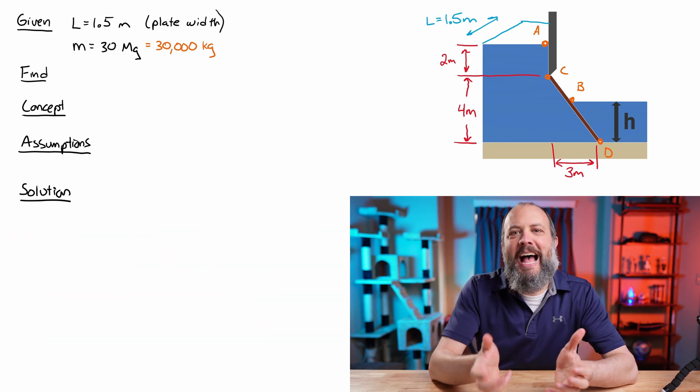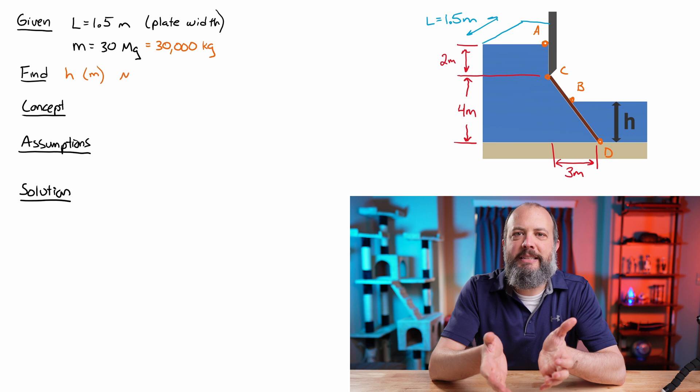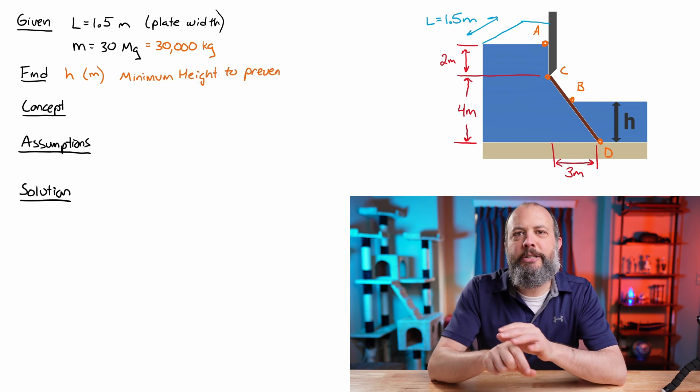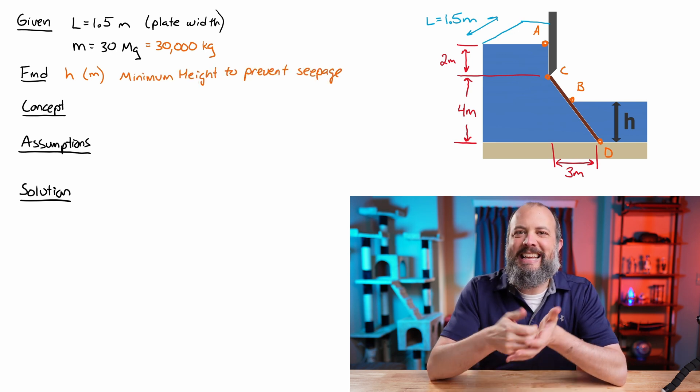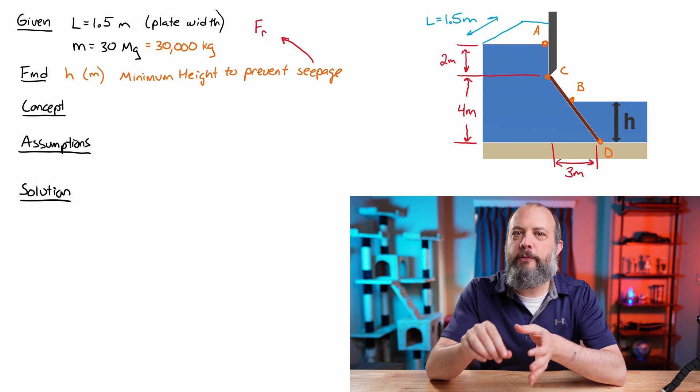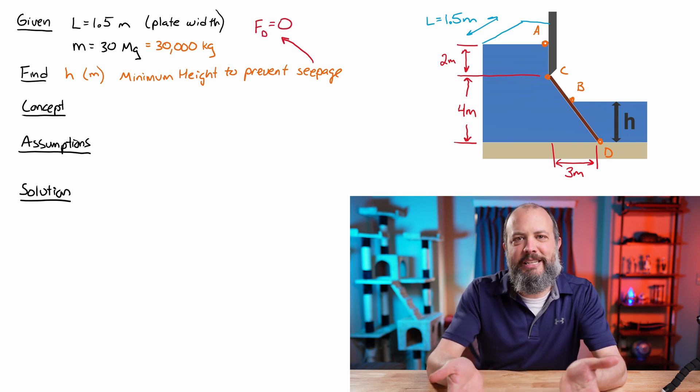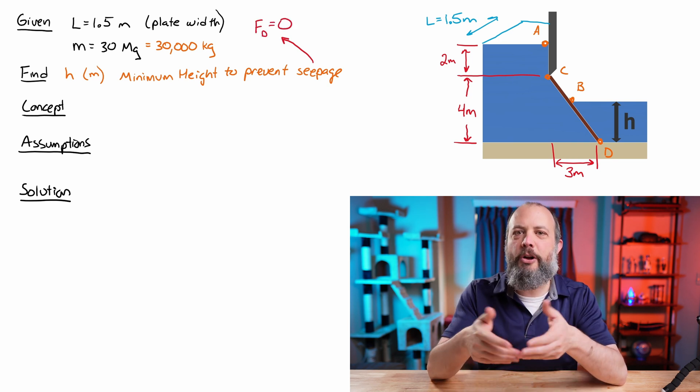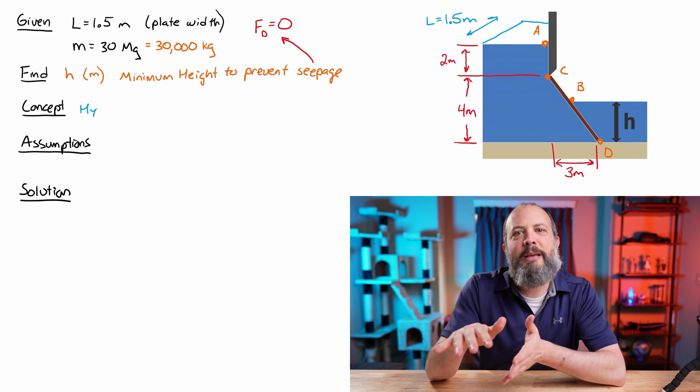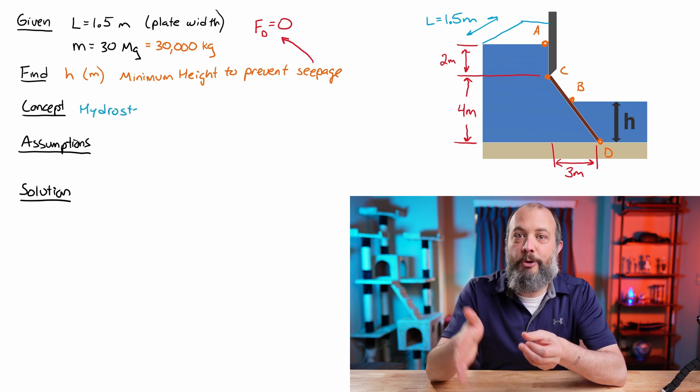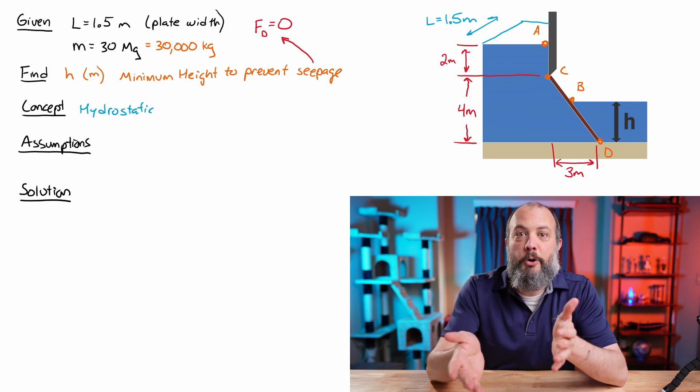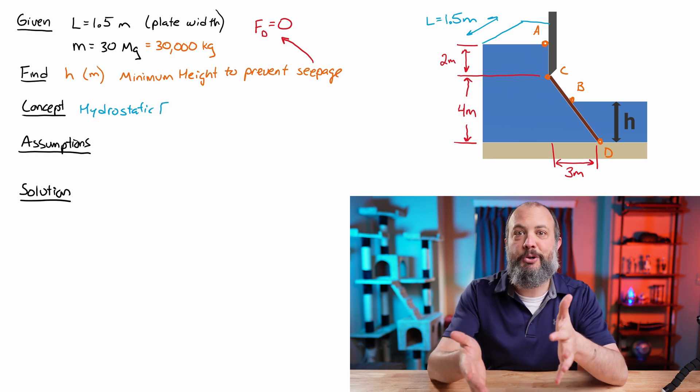And there was one other implied given in this problem statement. When we were told that we were trying to avoid seepage, that gives us that the normal force at point D will be zero. That's saying that the gate is right on the verge of just about being able to open. If there were a normal force acting here, it would mean that the gate is not on the verge of opening and that seepage is not about to occur.